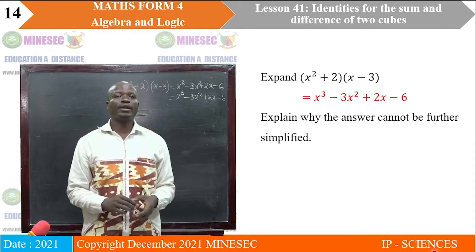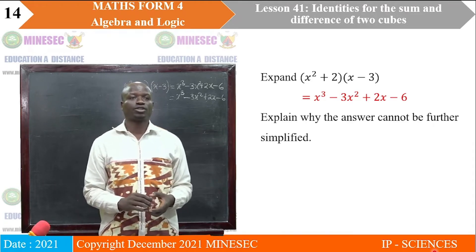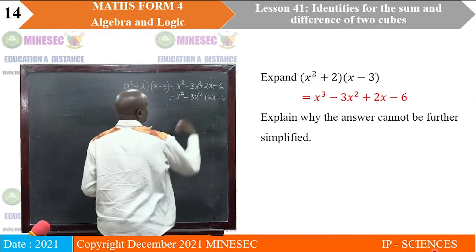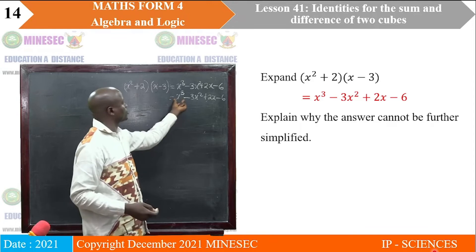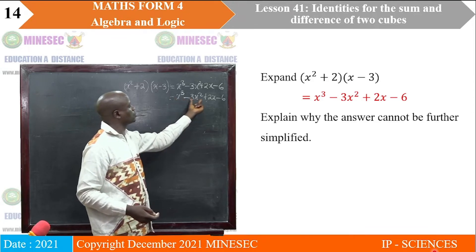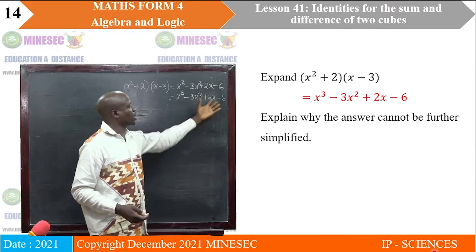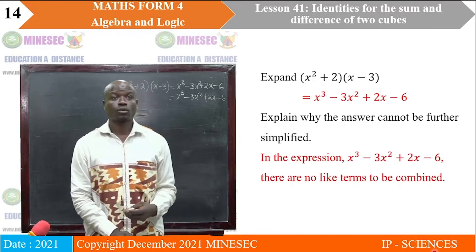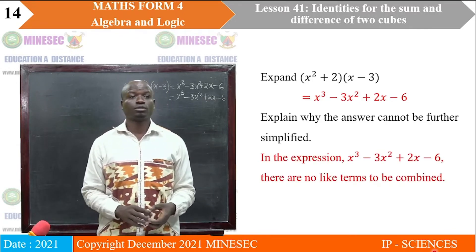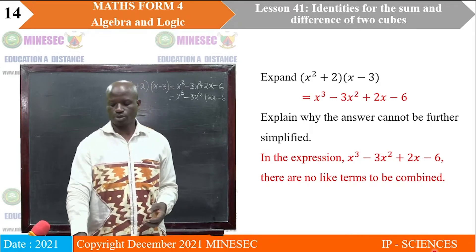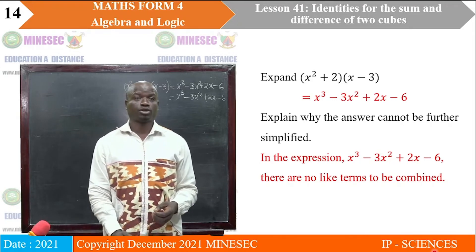The answer cannot be further simplified because there are no like terms. The variable is to the powers 3, 2, and 1, and we have only one constant term. So the expression remains as X cubed minus 3X squared plus 2X minus 6.